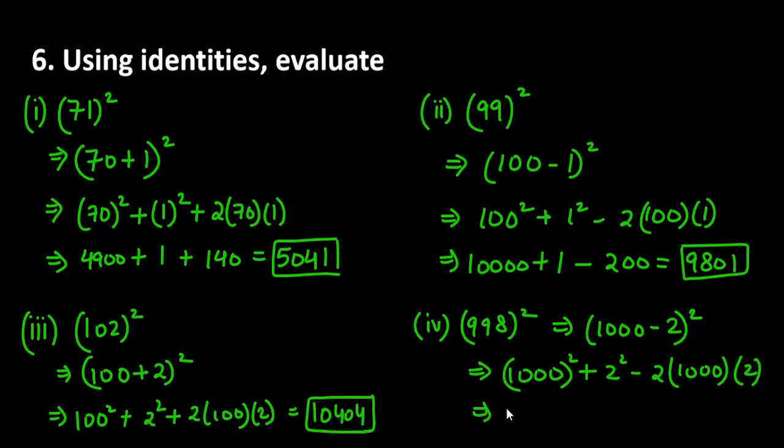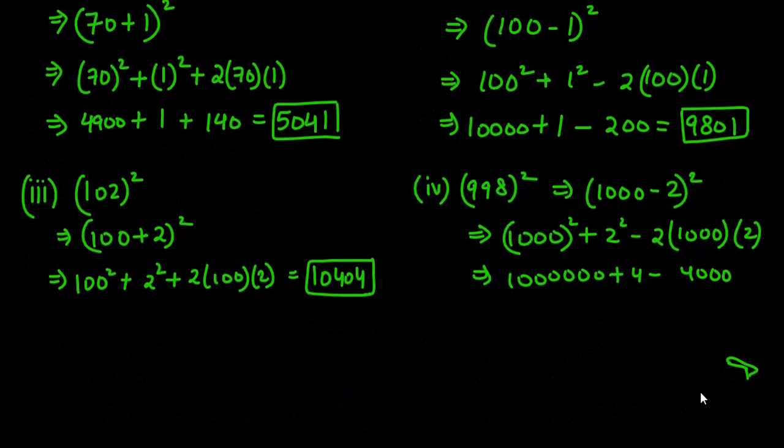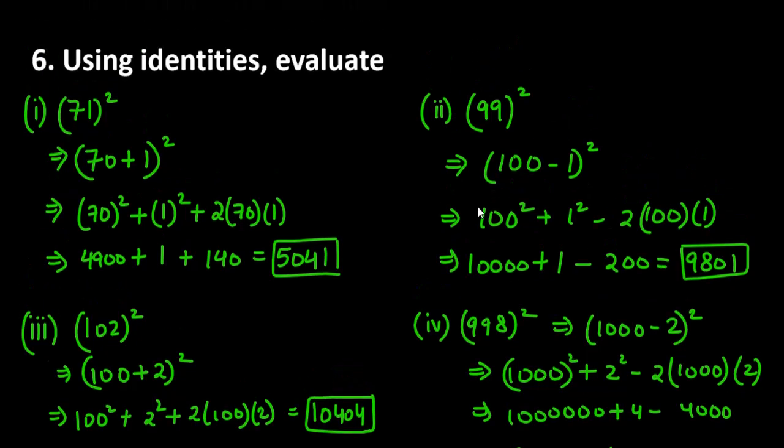1000 square will be 1000000 plus 4 minus 4000. The final answer will be 900000 minus 4000 plus 4 so it will be 996004.